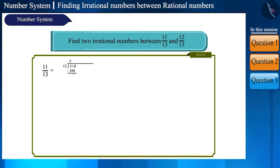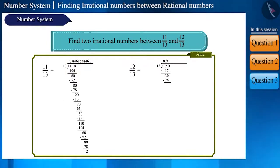The decimal form of 11 by 13 is 0.846153, 0.84615 and the decimal form of 12 by 13 is 0.923076, 0.92307. What shall we do now?